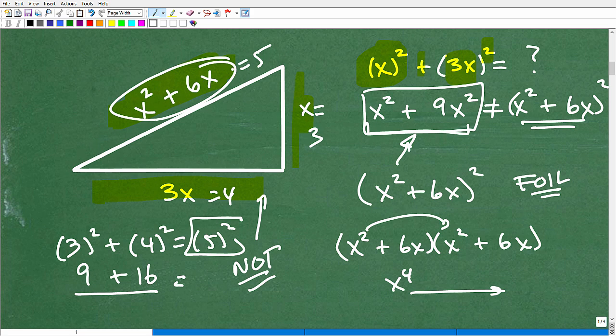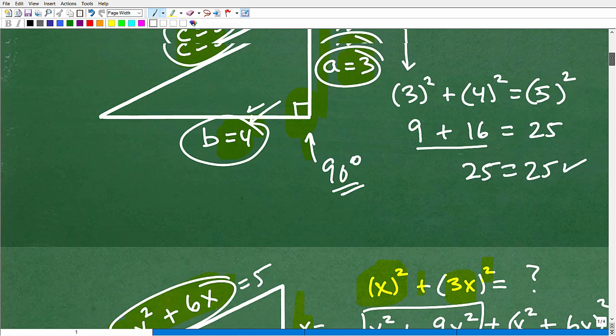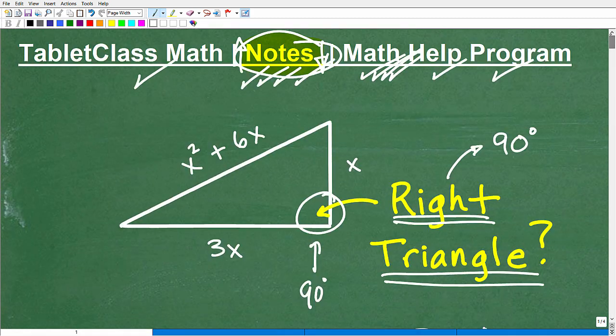By the way, it's called a hypotenuse. We wouldn't call this side the hypotenuse because it is not a right triangle. But if it was, this right here would be the x squared plus 6x would be the hypotenuse. But when we square it, we can see there's no way we're going to get to this. And basically, my question to you was to determine whether it is a right triangle or not.